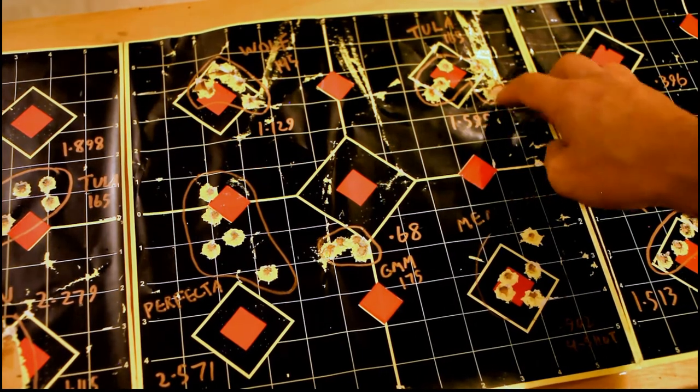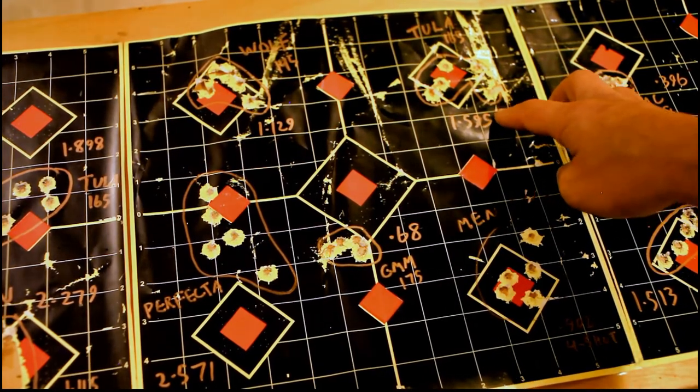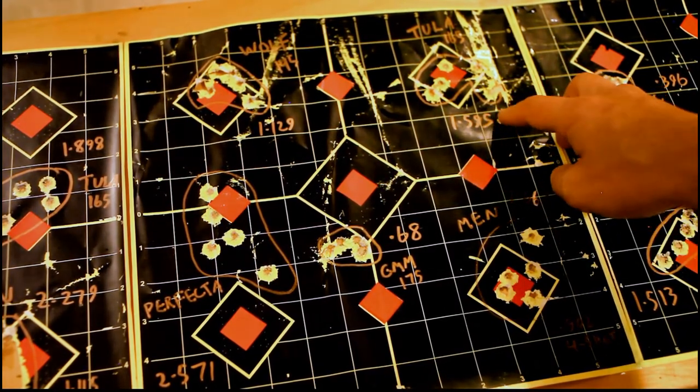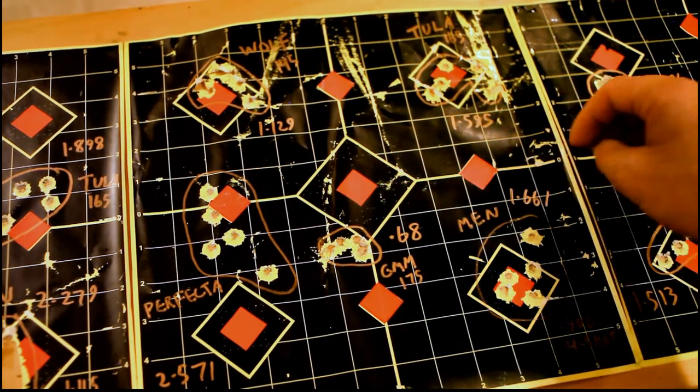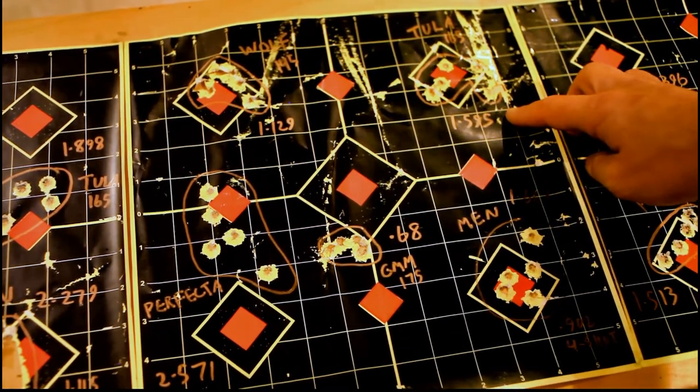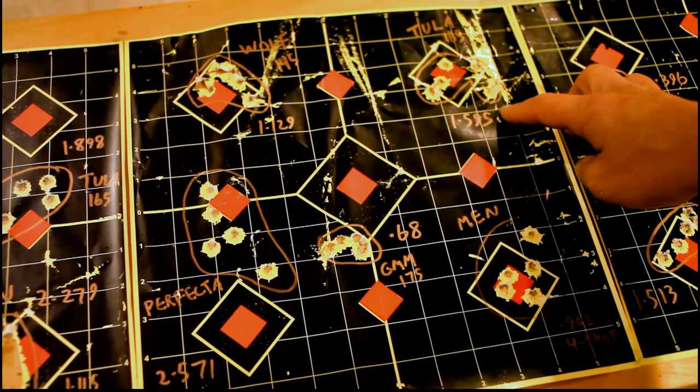And here for Tula 165s, I think I was shooting better as the day went on because these were later in the day than the first targets I showed. But here we have Tula 165 doing an inch and a half for 5 shots. Definitely not too shabby.